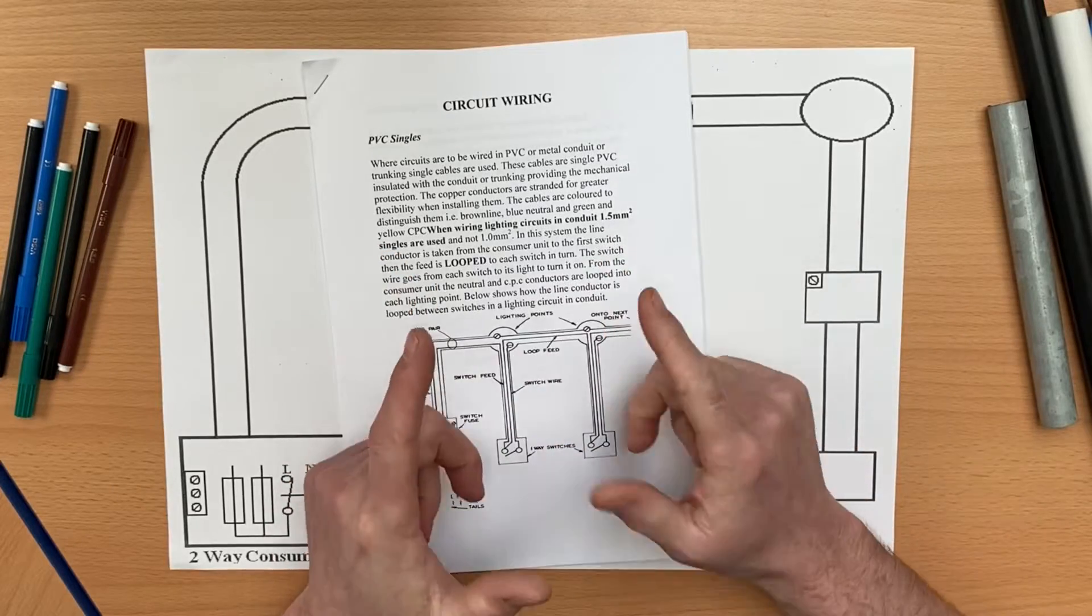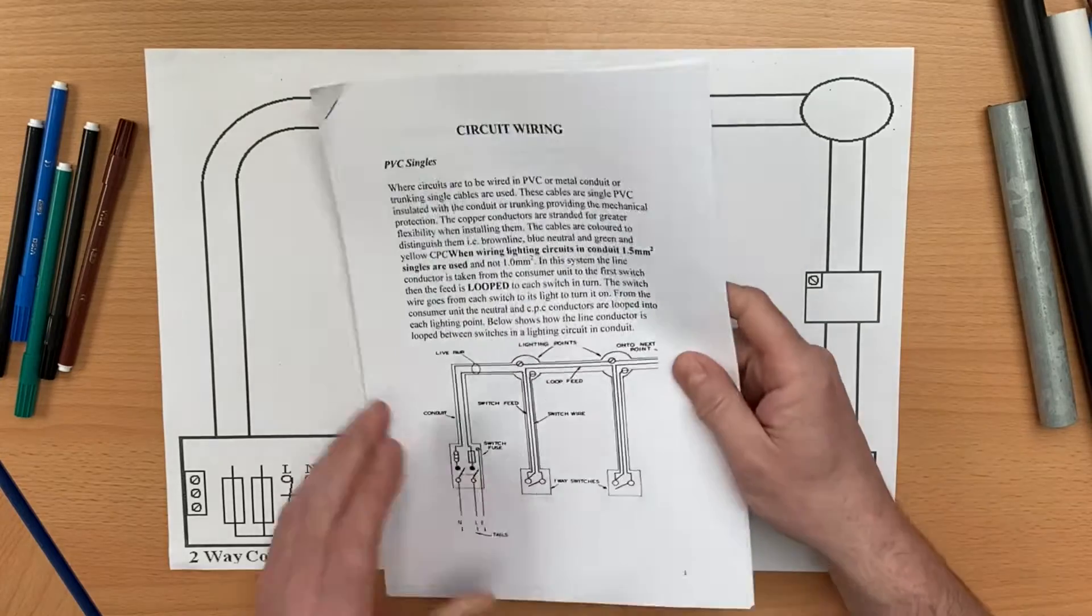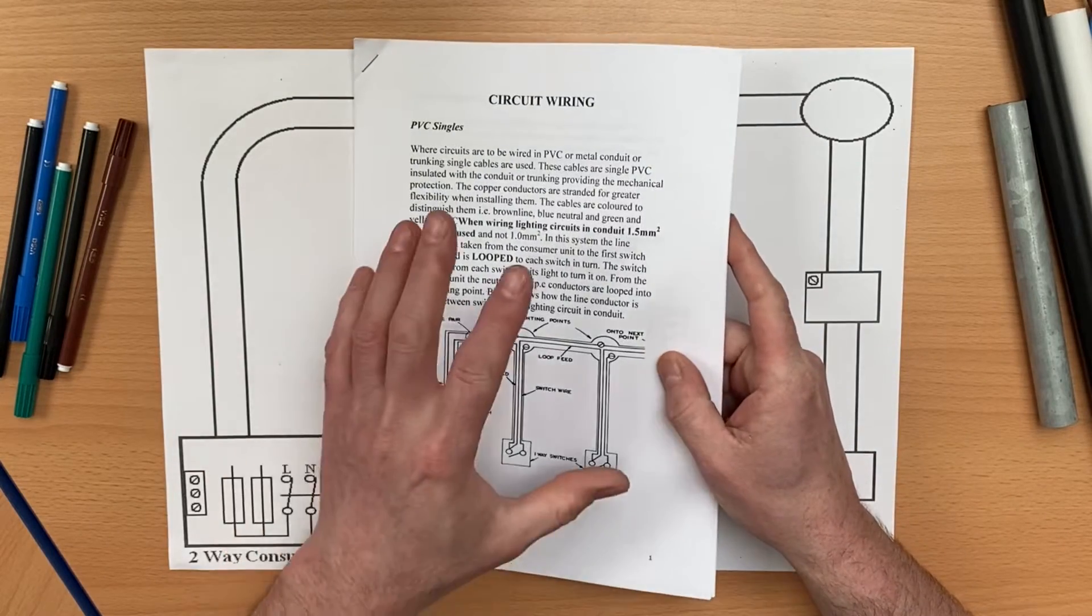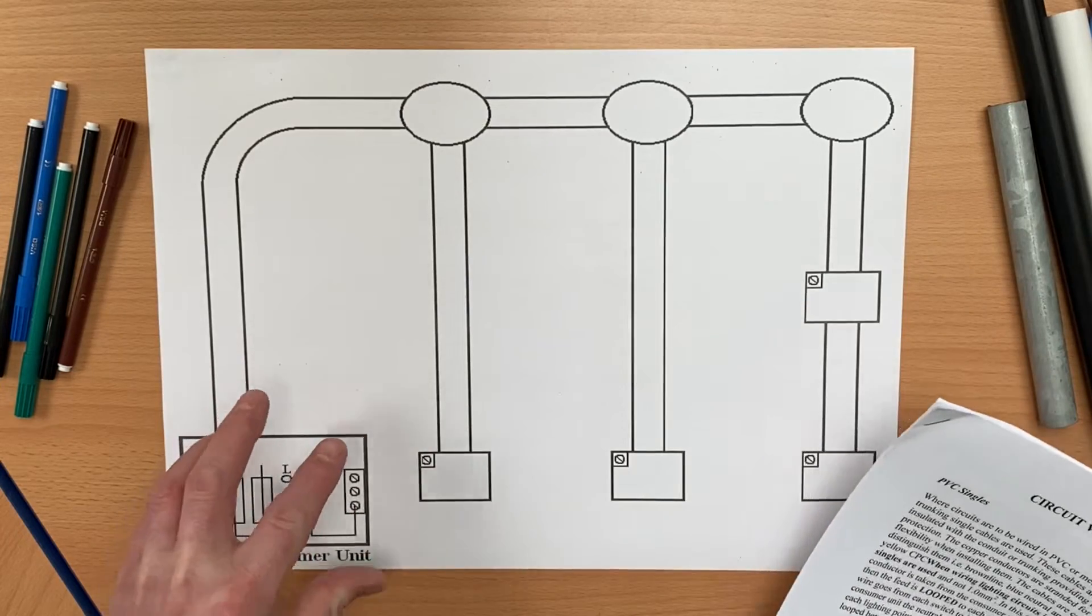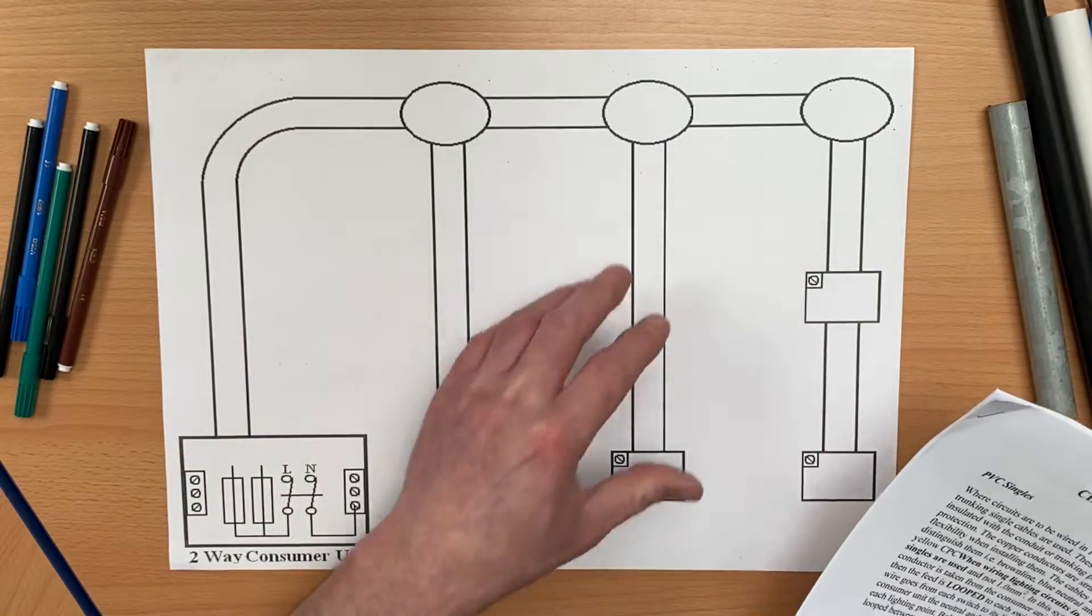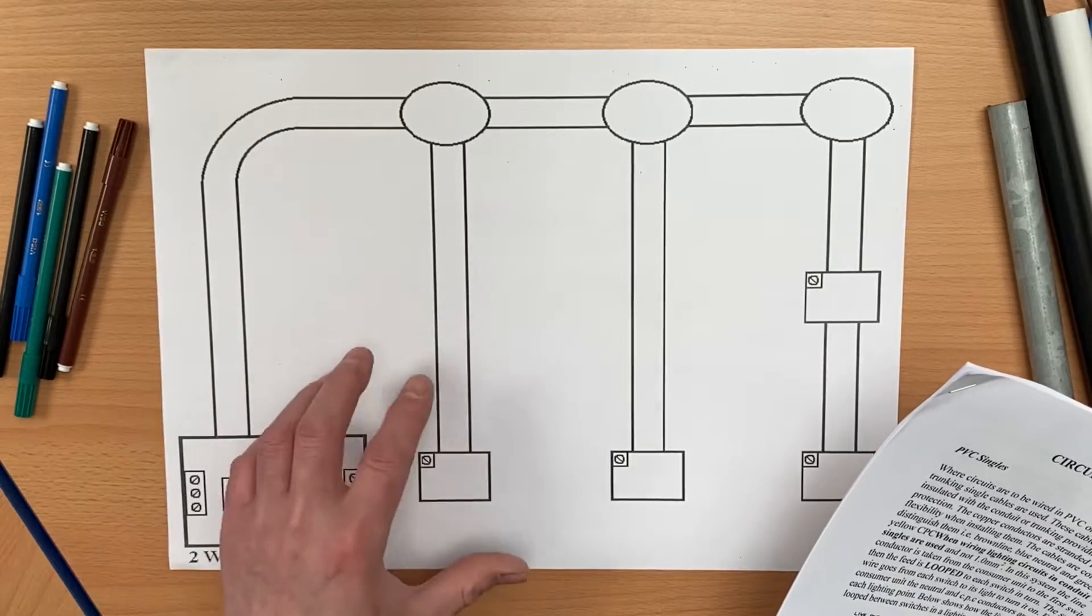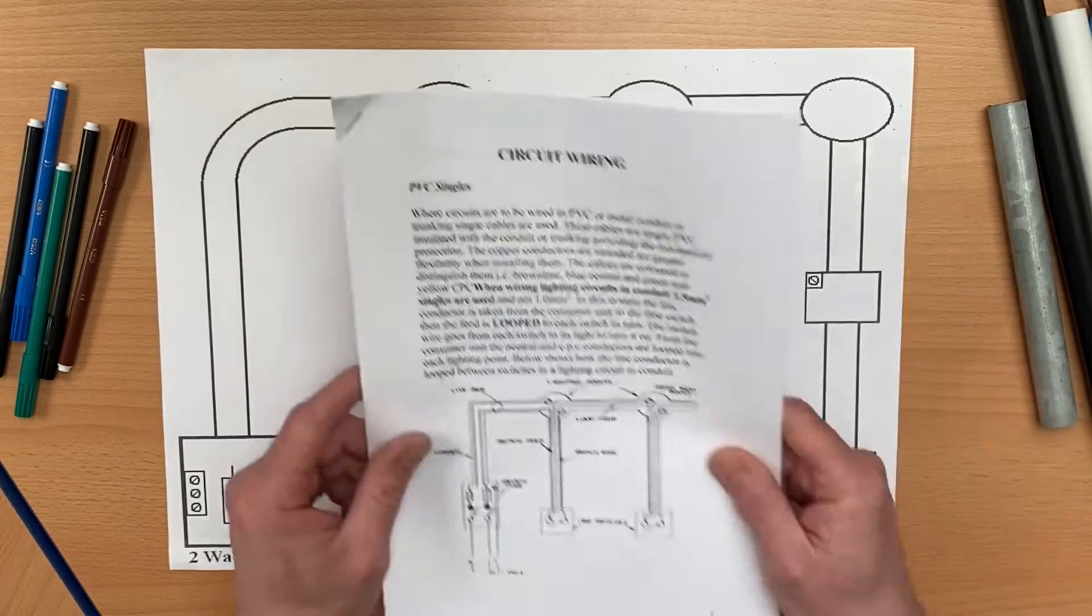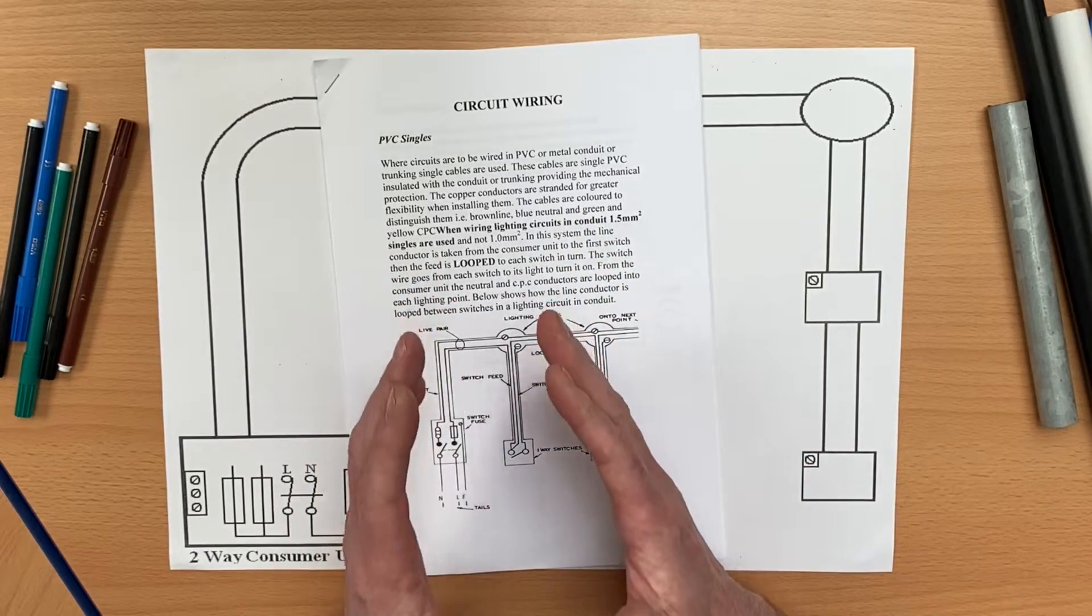We're going to continue our series on wiring lighting circuits using the conduit looping method. This booklet is downloadable from the link in the description and we're working through it in order to wire a conduit system I've developed at Tresham College, one that would be very easy for you to build at your college or maybe even at home.